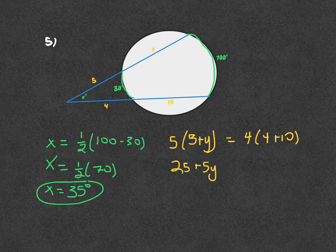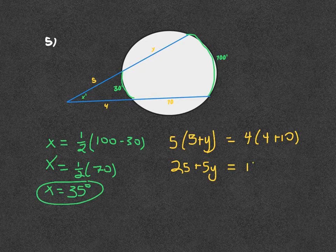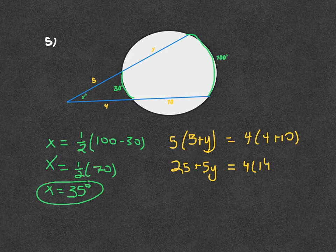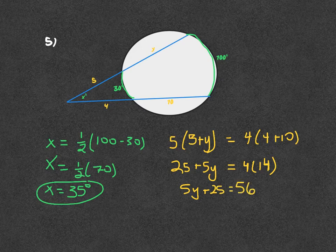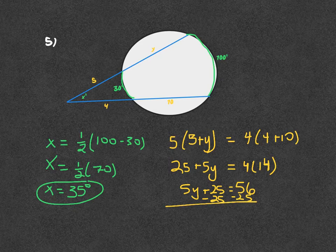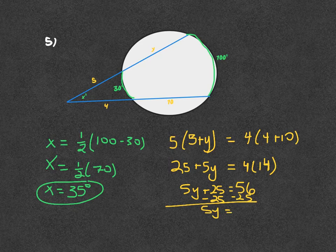10 plus 4 is 14. Then when we solve we have 5Y plus 25 equals 56. Subtract the 25 and 5Y equals 31.